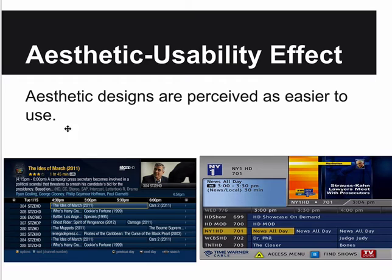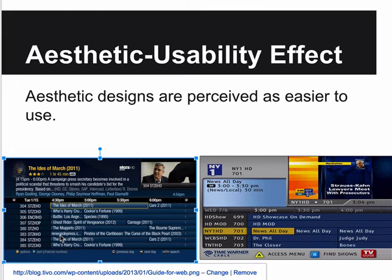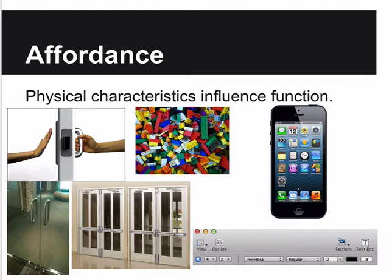The aesthetic usability effect is a research result telling us that aesthetic designs are perceived as easier to use. Compare TiVo versus Time Warner cable - basically the same design - but people will say TiVo is easier to use. Time Warner is just more crowded with more needless boxes and shading that isn't really needed. Anything that looks cleaner, people will tell you it's easier to use, even if it's not. So if you want people to say your software is easy to use, make it look good.